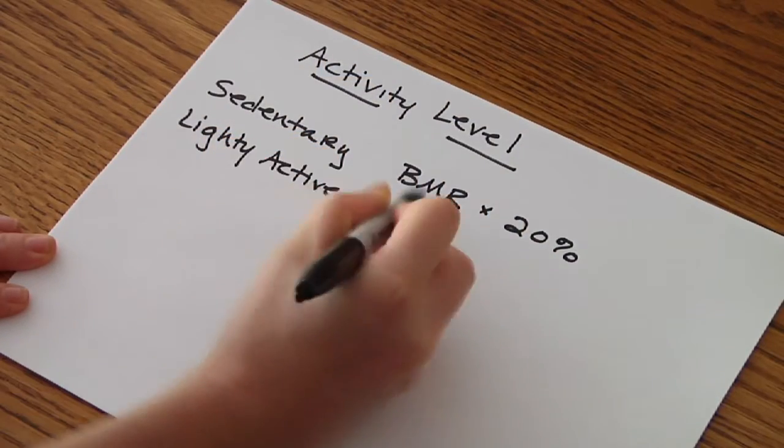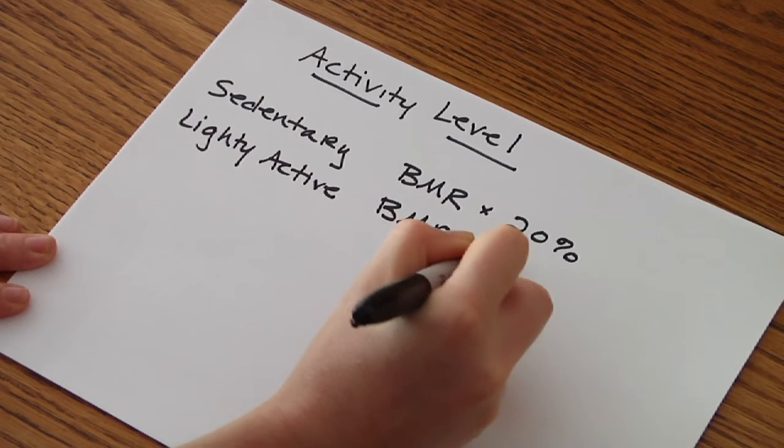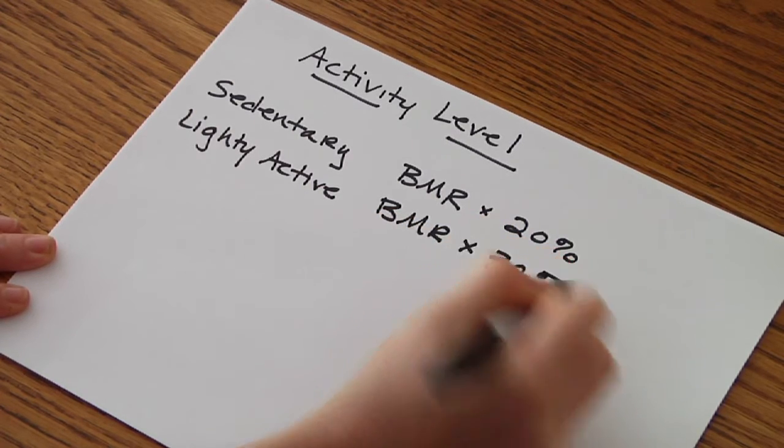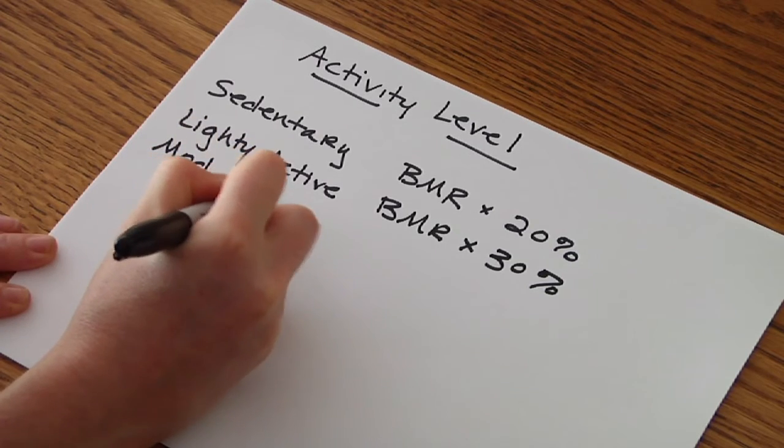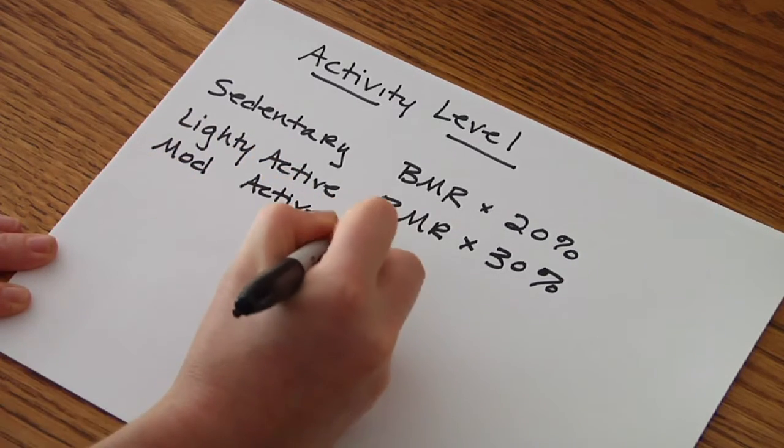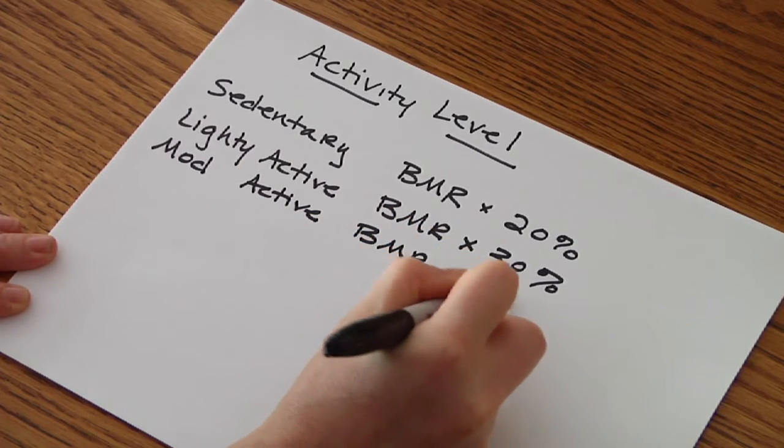There's sedentary where you'll take your BMR and multiply that by 20%, lightly active where you multiply your BMR by 30%, and moderately active where you multiply the BMR times 40%.